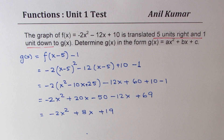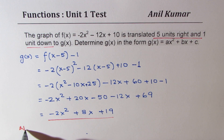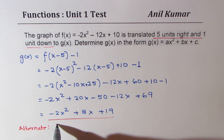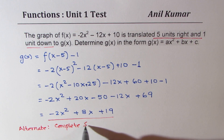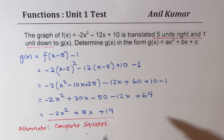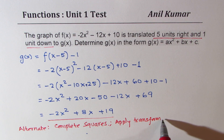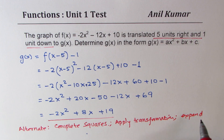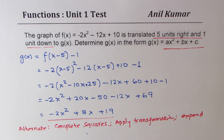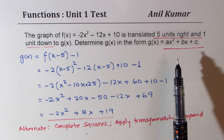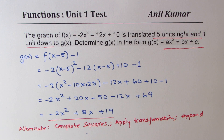An alternate approach would have been to complete the squares first, apply the transformation, and then expand to get the answer in standard form. But that alternate approach is pretty lengthy. For questions where the answer must be in standard form, this direct substitution method is better. I hope you appreciate it. Feel free to write your comments and share your views. If you like and subscribe to my videos, that'd be great. Thanks for watching and all the best.